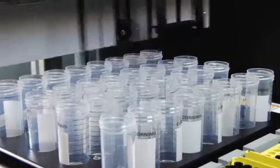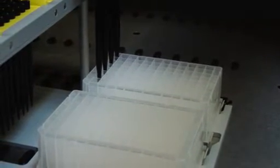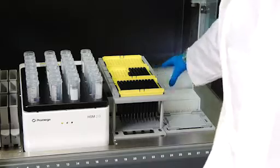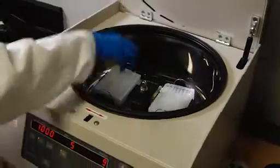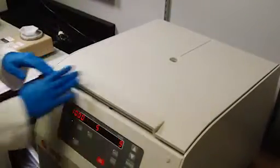After extraction, the eluates are removed from the processing tubes and placed onto an intermediate plate. The intermediate plate is centrifuged off-deck to clear any non-magnetic resin fines and then returned to the liquid handler for transfer to final elution apparatus.